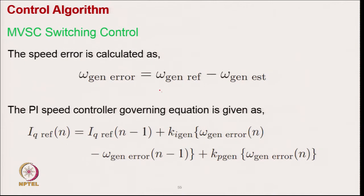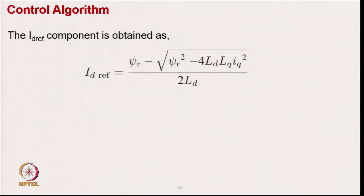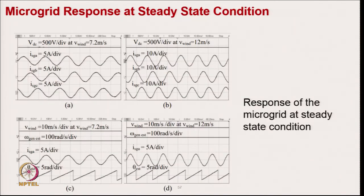For the wind machine side voltage source converter control, we have the wind speed error for MPPT, and use a speed controller to give the quadrature-axis component — the torque-producing component of current. The direct-axis component is determined for unity power factor operation. In the DQ frame, using Park and inverse Park transformation, we get three-phase reference current for the synchronous generator, and with sensed generator current we achieve current control.